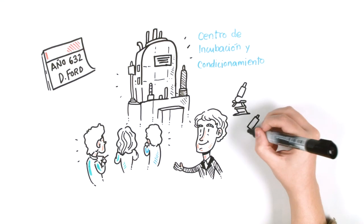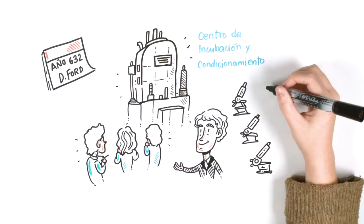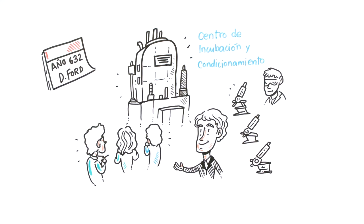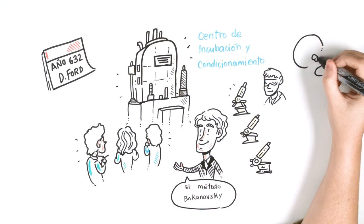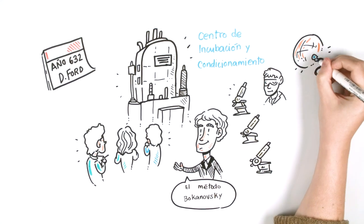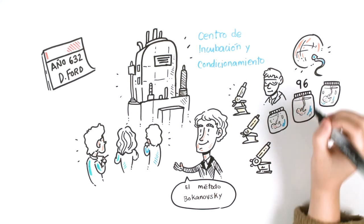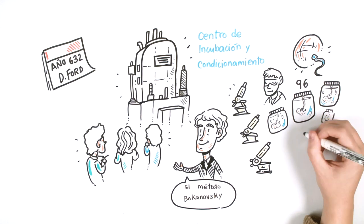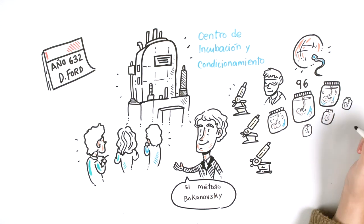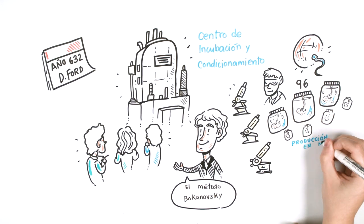They entered the fertilization lab, where 300 fertilizers worked examining yellow microscopes. The director proudly explained the modern Bokanovsky method, where an egg and sperm joined in a test tube and multiplied, giving rise to 896 identical embryos. This process was performed paradoxically by stopping normal growth. It was the process of mass production applied to biology.